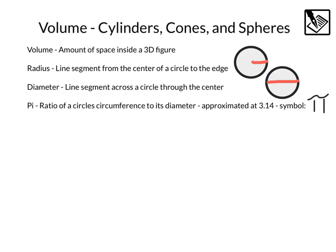First, a quick review of some things you've seen before. Volume is a measurement of the amount of space inside of a 3D figure. A radius is a line segment from the center of a circle to the edge. The diameter, on the other hand, is a segment across the entire circle through the center. The radius is always half of the diameter.